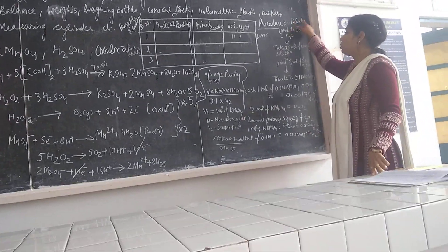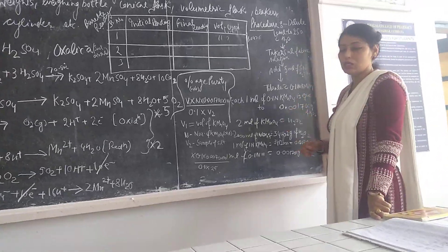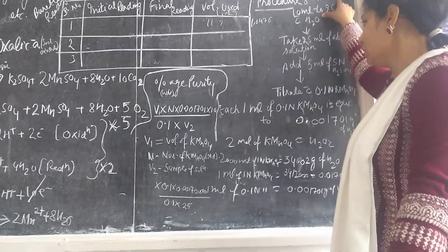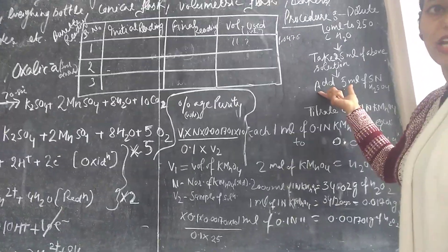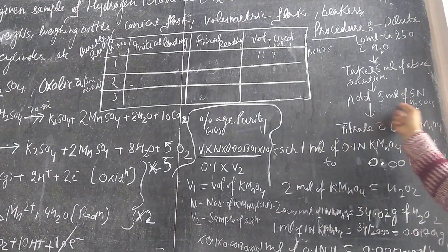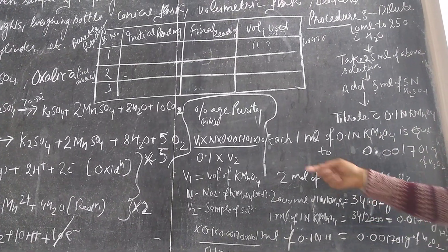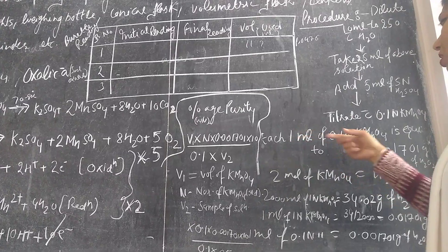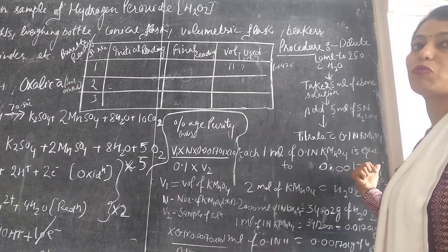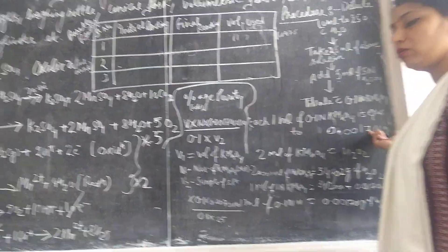This is the procedure for assay. Dilute 10 ml of the solution to 250 ml with water, then take 25 ml of this diluted solution, then add 5 ml of 5 normal sulfuric acid to provide the acidic media. Then titrate it against 0.1 normal KMnO4 solution.